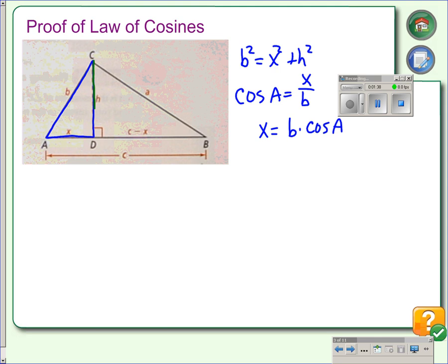In this other triangle here, we can do the same thing. Using the Pythagorean theorem, we can say a squared is equal to c minus x quantity squared plus h squared. The squares of the legs are equal to the square of the hypotenuse.